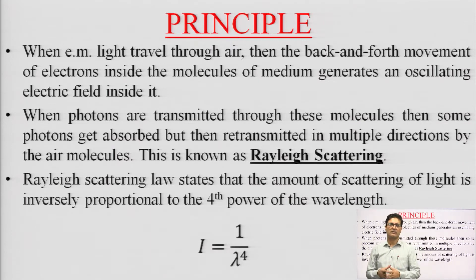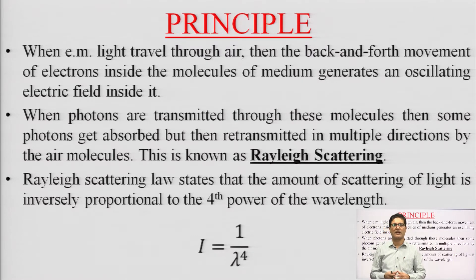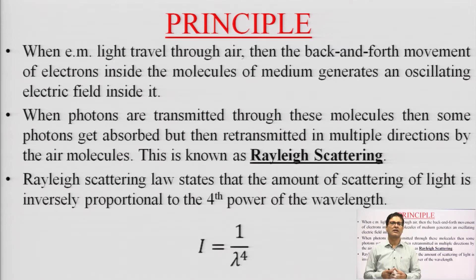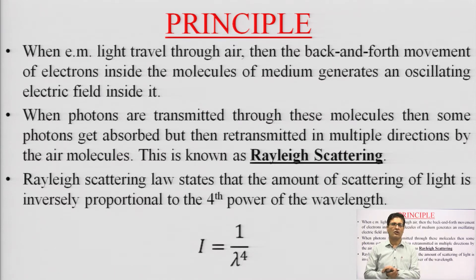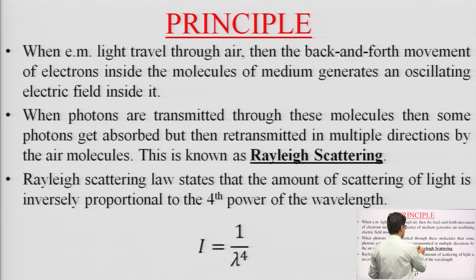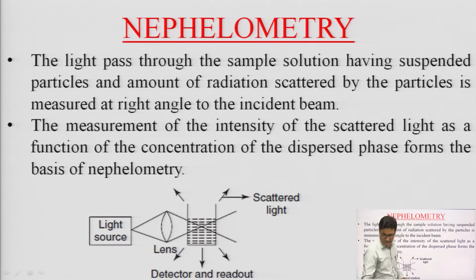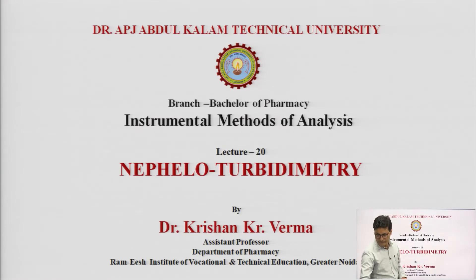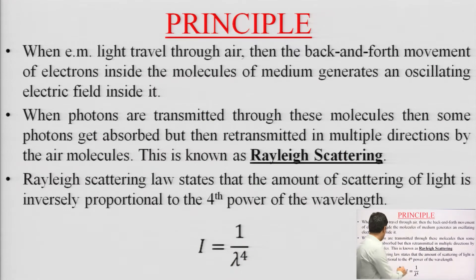Gaseous molecules or particles in air may cause the scattering of photons coming in their way, and this scattering can be in all or multiple directions. This phenomenon is called Rayleigh scattering.